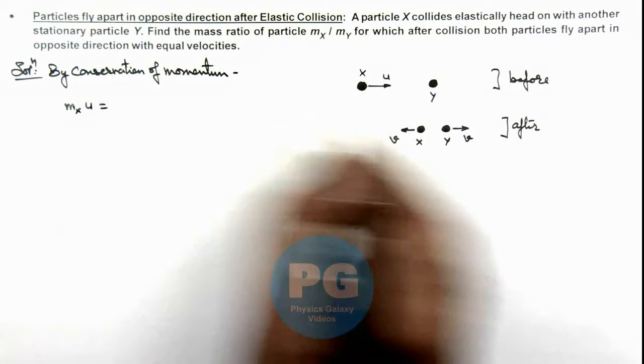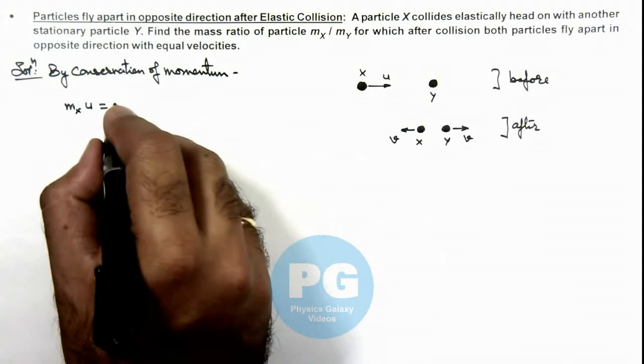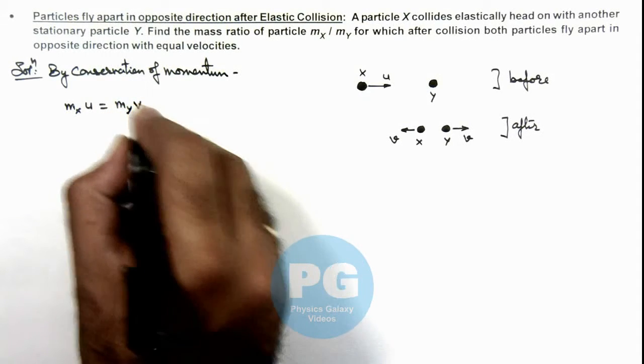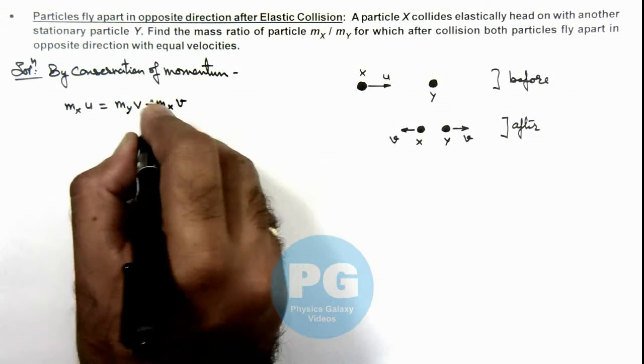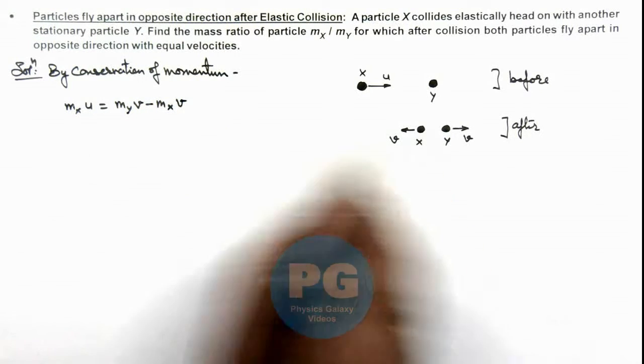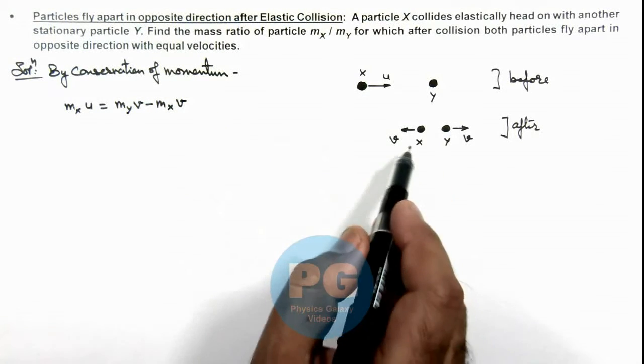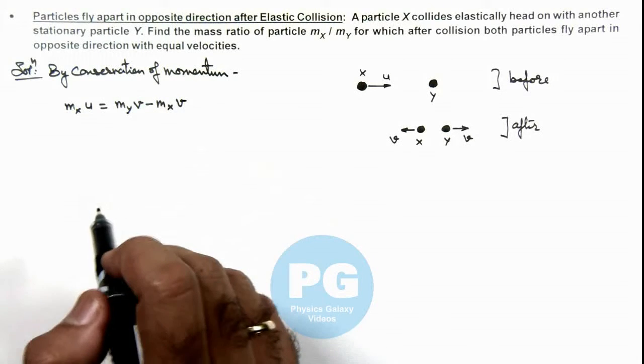Must be equal to after collision final momentum is my v minus mx v. As X is going back with the velocity v, so we have taken the momentum negative.